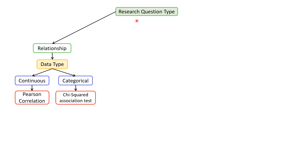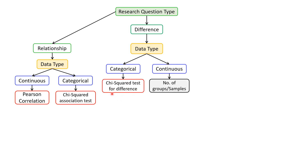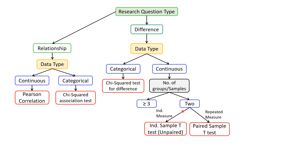If the purpose is to find the difference between means or variance of samples or groups, the next step is to check the data type. If it is categorical, we can apply the chi-squared test for differences. If it is continuous, we check the number of groups. If the number of groups is 2, we then look at the experimental design — if it is paired with repeated measures, we apply the paired sample t-test.